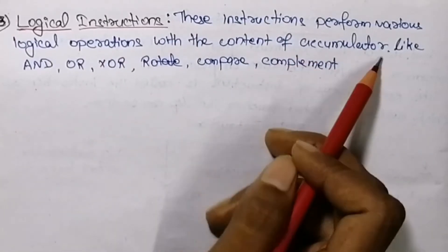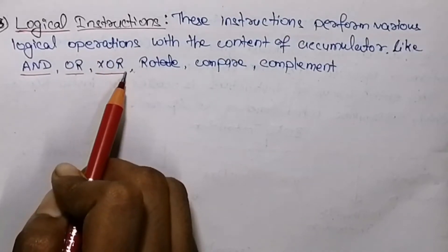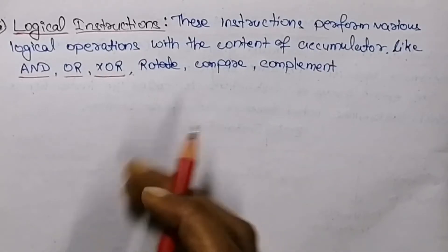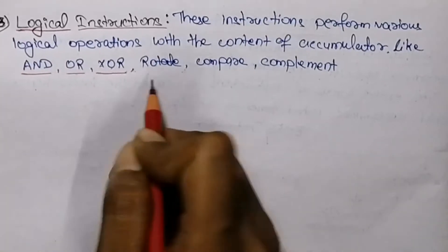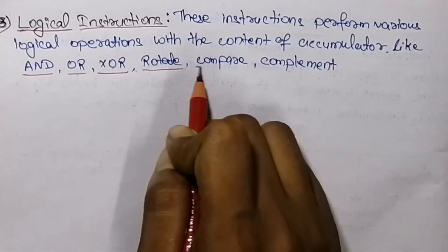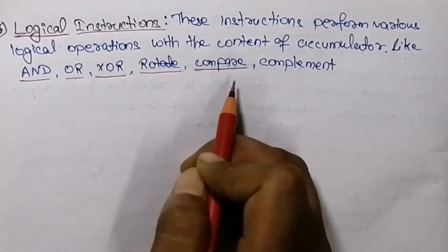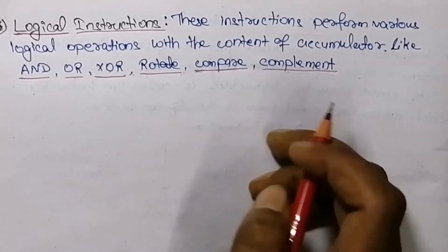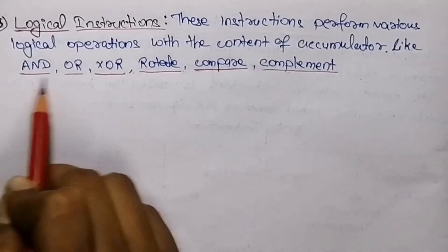As the name suggests, logical instructions perform various logical operations with the content of the accumulator. AND, OR, and XOR (exclusive OR) operations can be performed with the content of the accumulator and with any 8-bit number, or the content of a register or memory. The result is stored in the accumulator. Each bit in the accumulator can also be shifted left or right using rotate operations. Compare is used to compare two 8-bit numbers with the accumulator content, and complement replaces all zeros with ones and all ones with zeros.